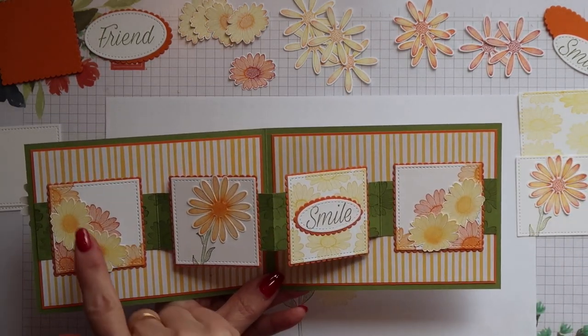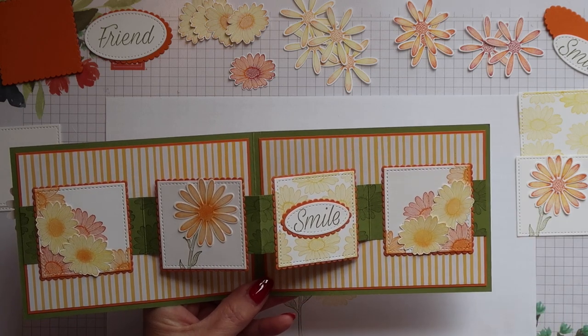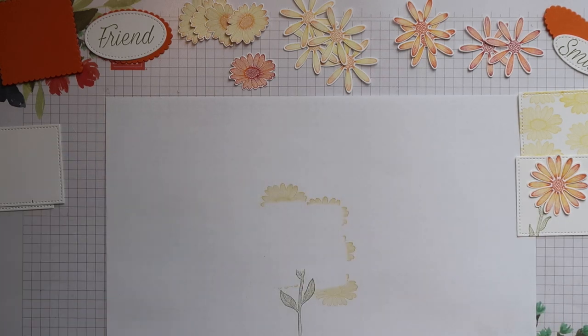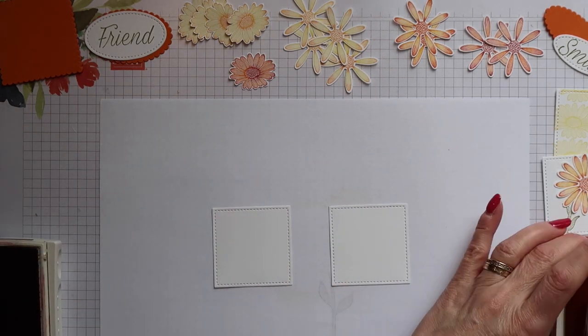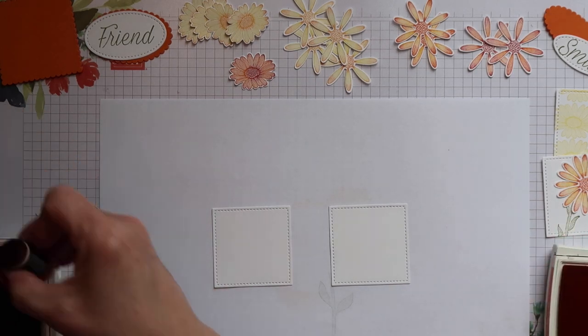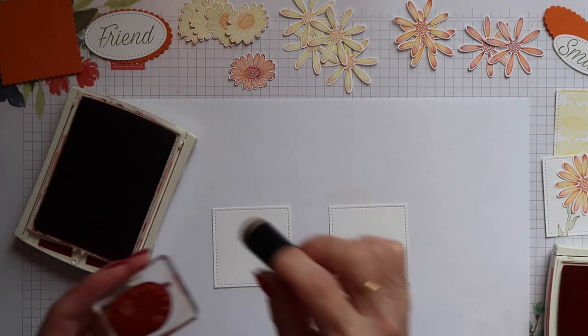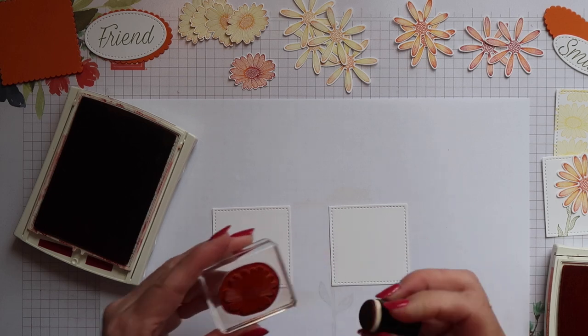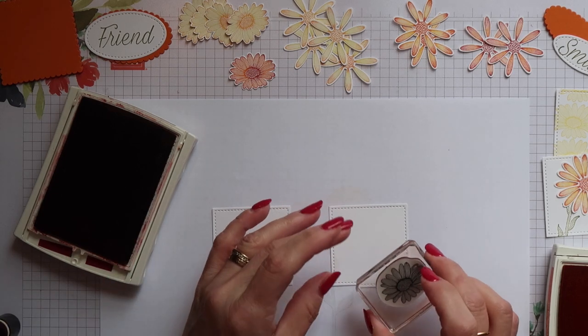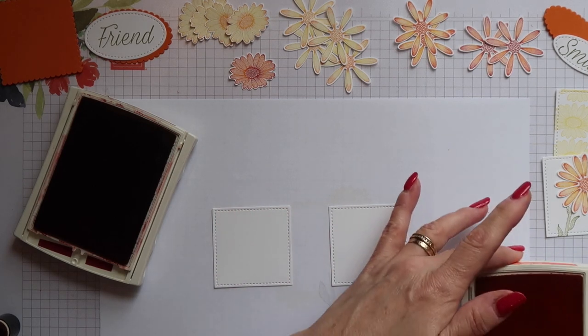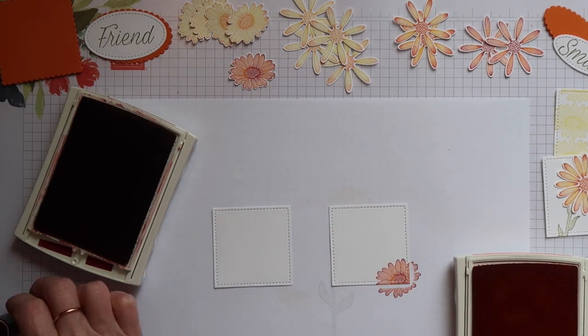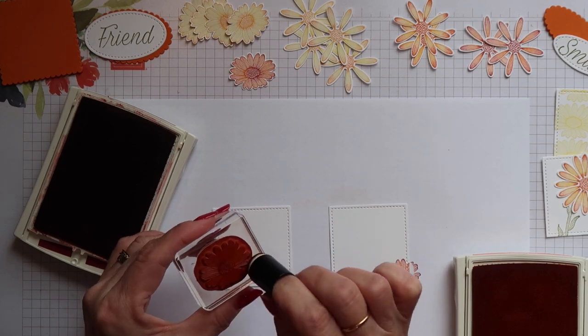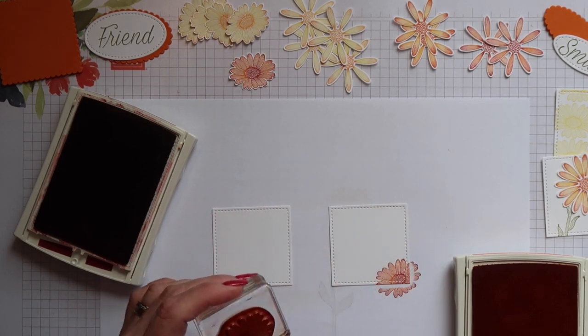The last two panels are mirror images of each other. I'm starting with the Pumpkin Pie daisies and I'm going to use a sponge dauber to add some Cherry Cobbler ink just around the edge of the petals and in the centre of each flower. I'm going to stamp one twice on each panel.